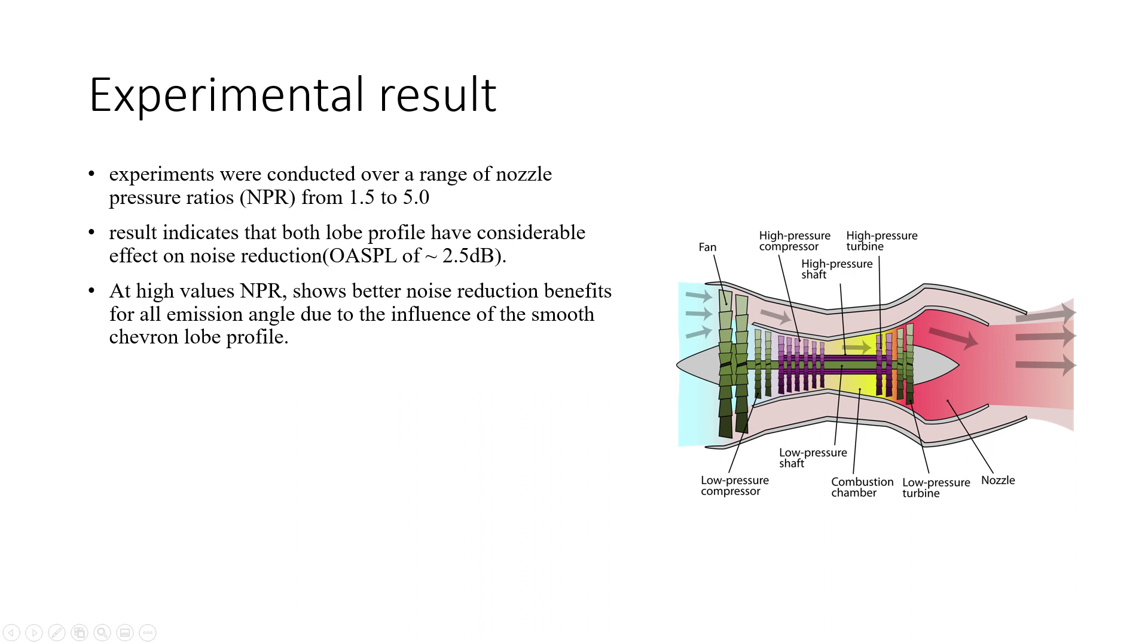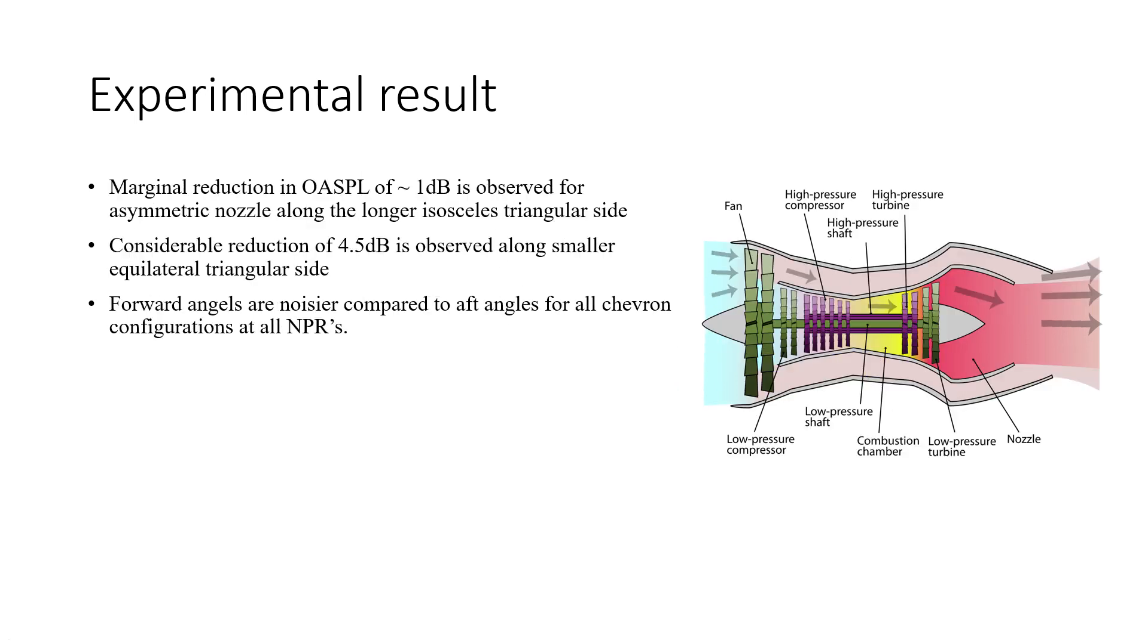A marginal reduction in OASPL of 1 decibel is observed for asymmetric nozzle along the longer isosceles triangular side, and a considerable reduction of 4.5 decibels is observed along smaller equilateral triangular side. It was also observed that the forward angles are noisier compared to aft angles for all chevron configurations at all NPRs.